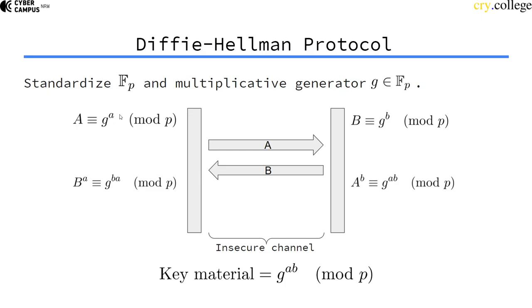since they are each in possession of their secret exponent, they can take the public value of the communication partner, raise that to the power of their secret exponent. And they can both do this on both sides. And now they have agreed on a secret. That is the generator to the power of A times B.